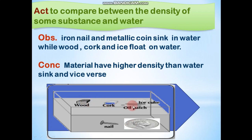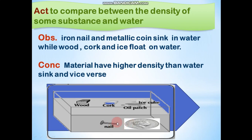Wood, cork, oil patch, and ice cube float; iron nail and coin sink. Conclusion: Why? Because materials with higher density than water sink, and vice versa. These materials have density more than water, and these materials have density less than water, so they will float.